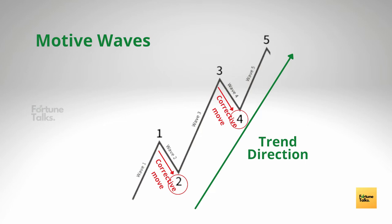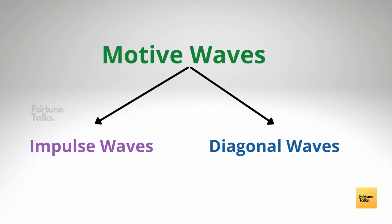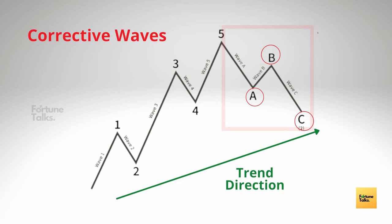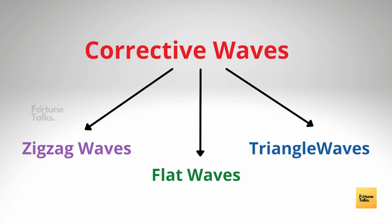Motive waves are usually of two types: impulse waves and diagonal waves. The corrective waves are those that counter the main trend or move against the main trend. Corrective waves are more complex than motive waves. There are three types of corrective waves: zigzag waves, diagonal waves, and triangle waves. We will talk about all of them in detail.